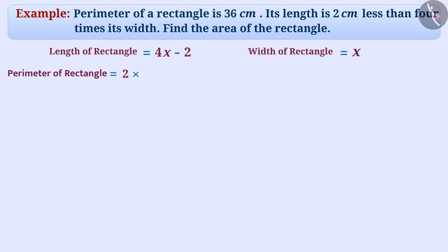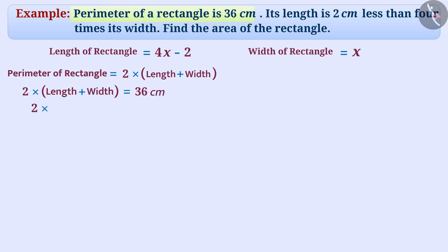We know that the perimeter of a rectangle is 2 multiplied by length plus width. We are given the perimeter of rectangle as 36. So, 2 multiplied by 4x minus 2 plus x is equal to 36 cm.